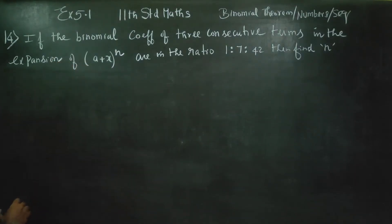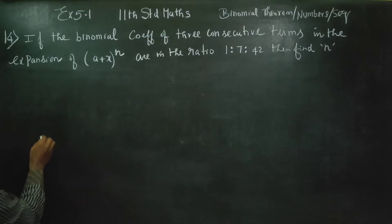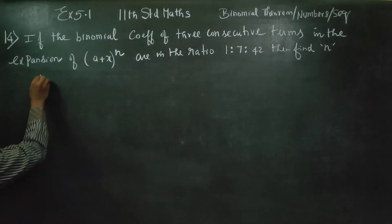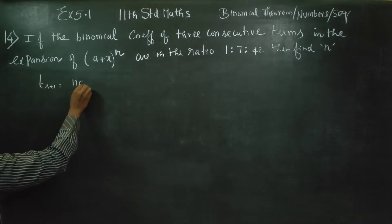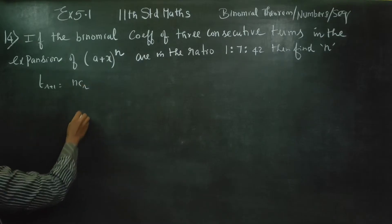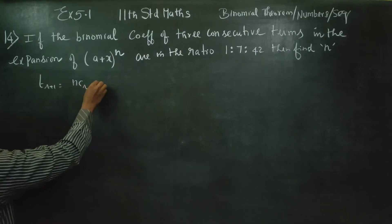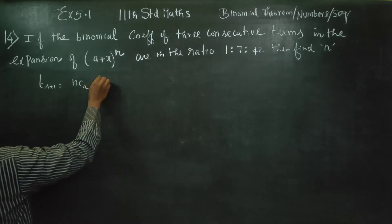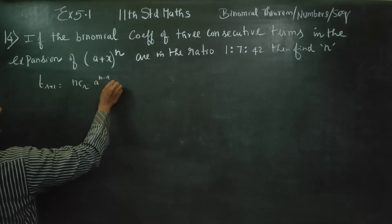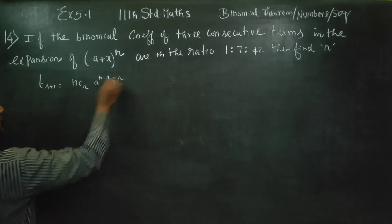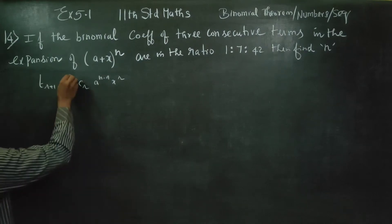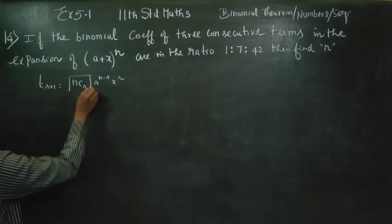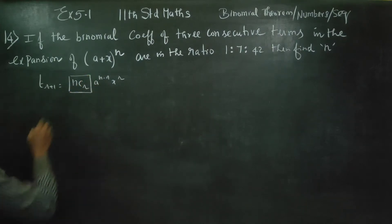The coefficient follows a general formula. The general term formula is T(R+1) = nCr × a^(n-r) × x^r. This is the general term formula, and this part is the coefficient.